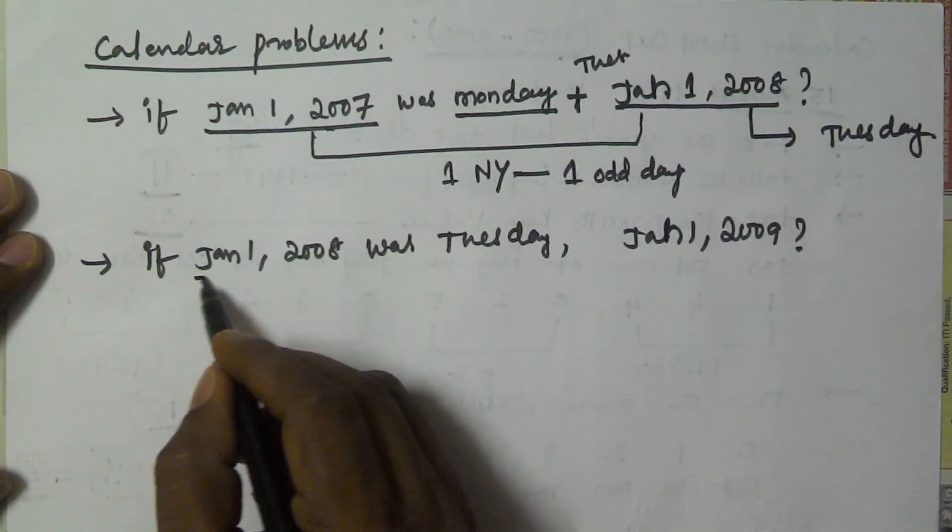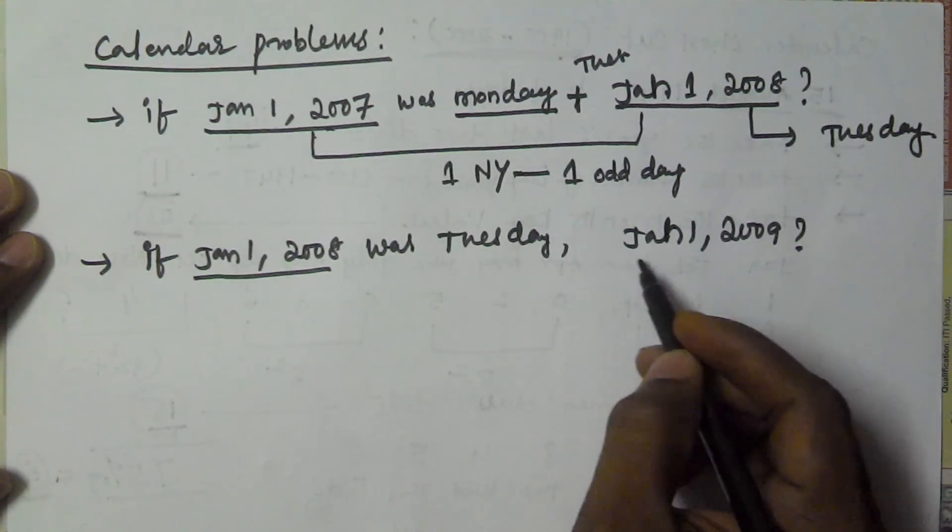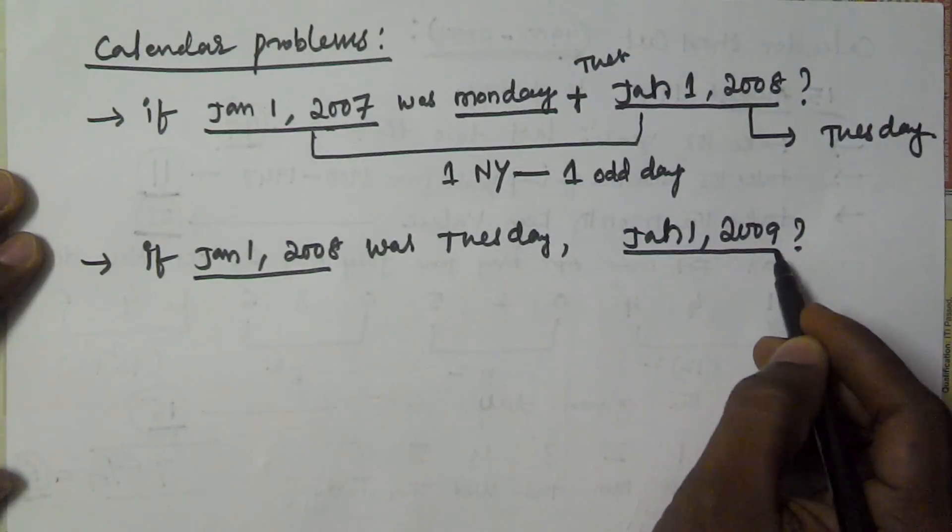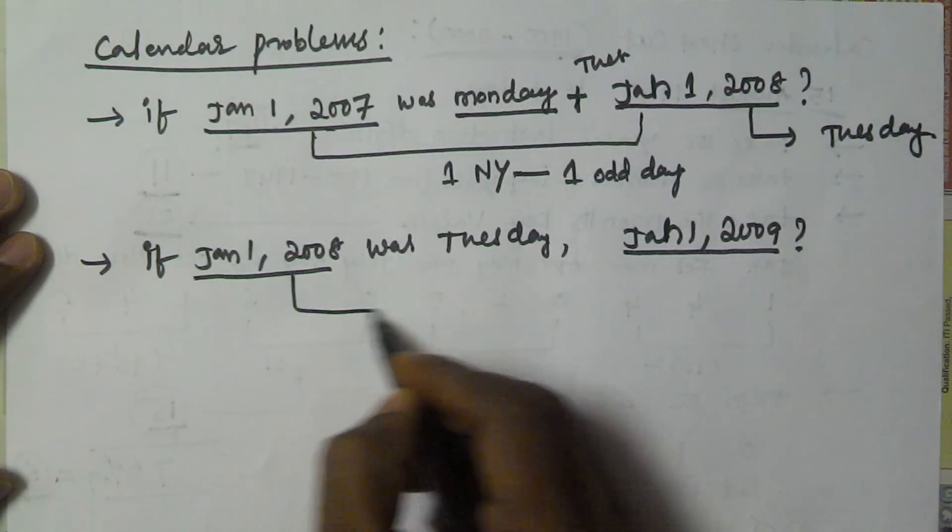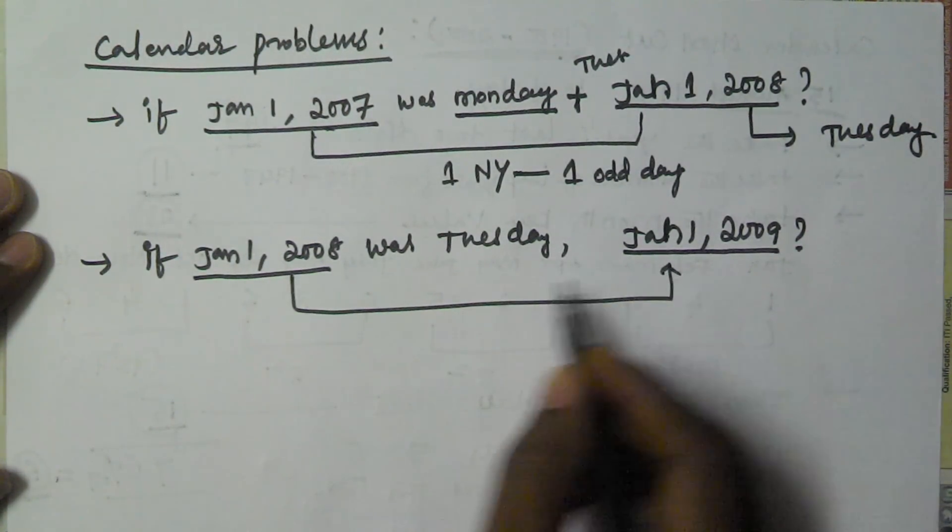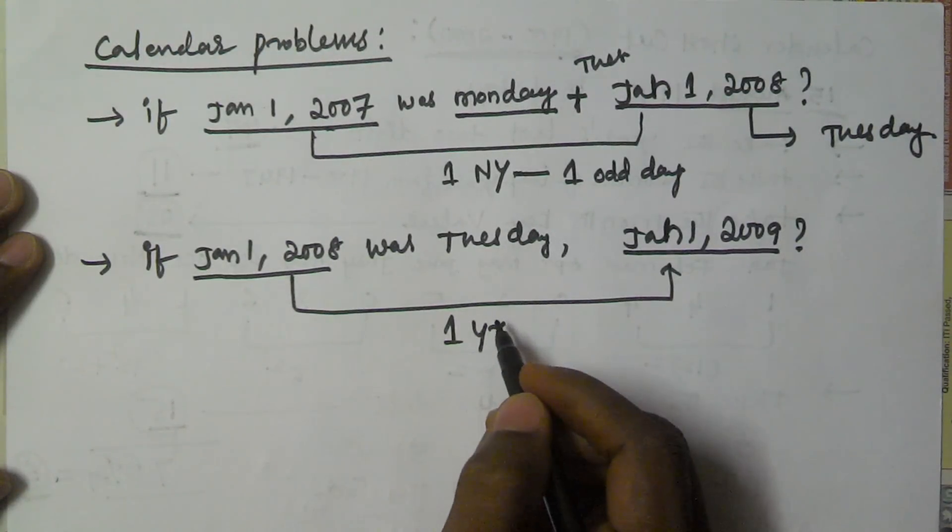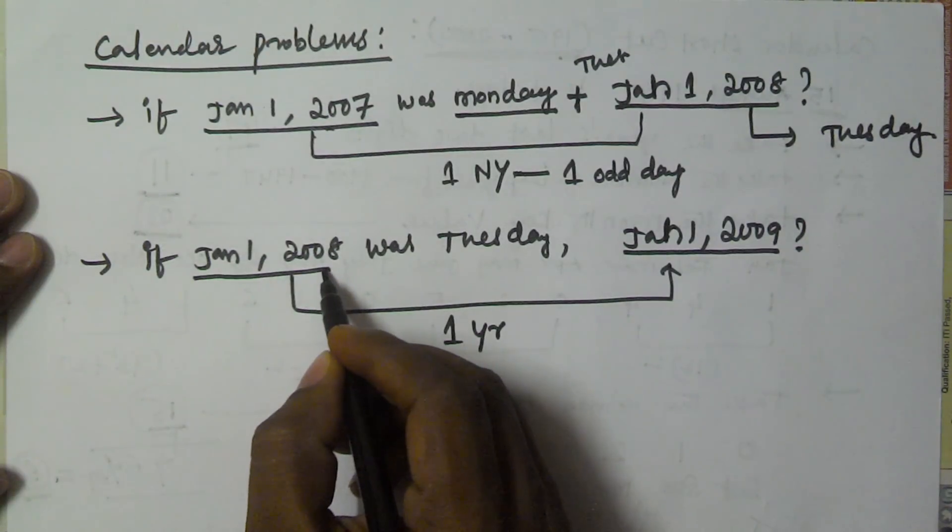So here from January 1st, 2008 to January 1st, 2009, one year is there. One year. But this year is not normal year. Why? Because 2008 is a leap year.